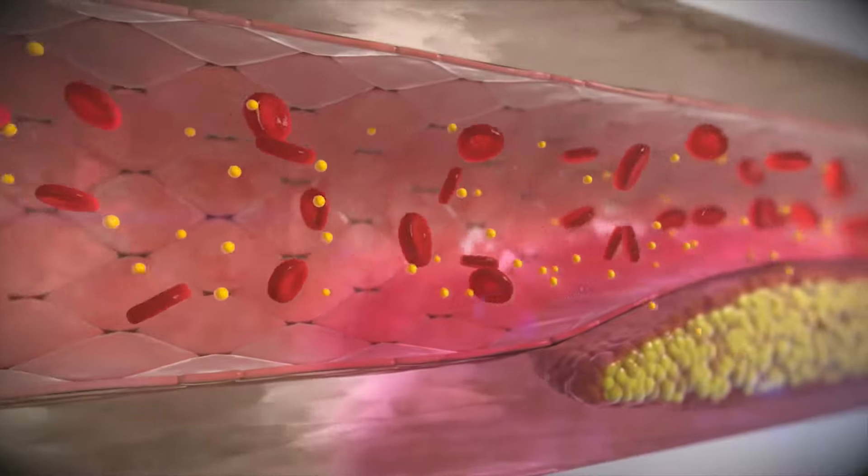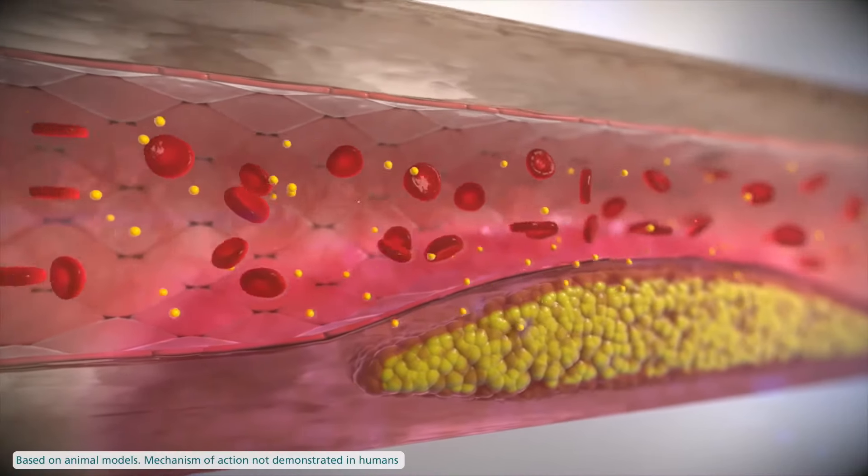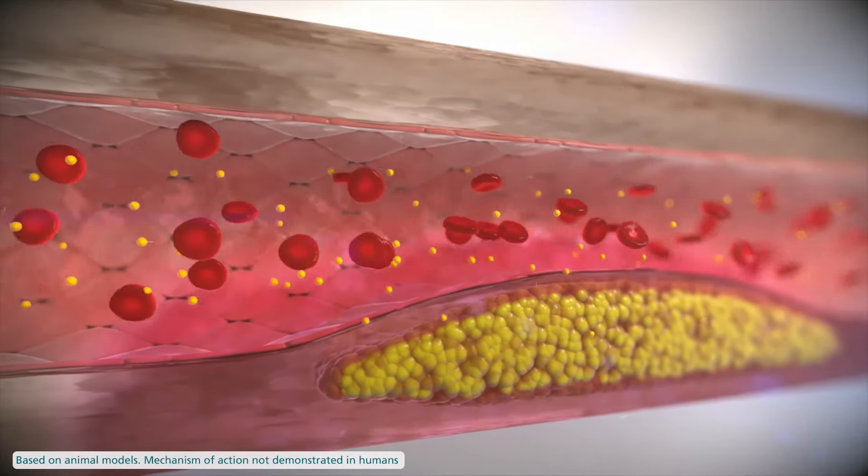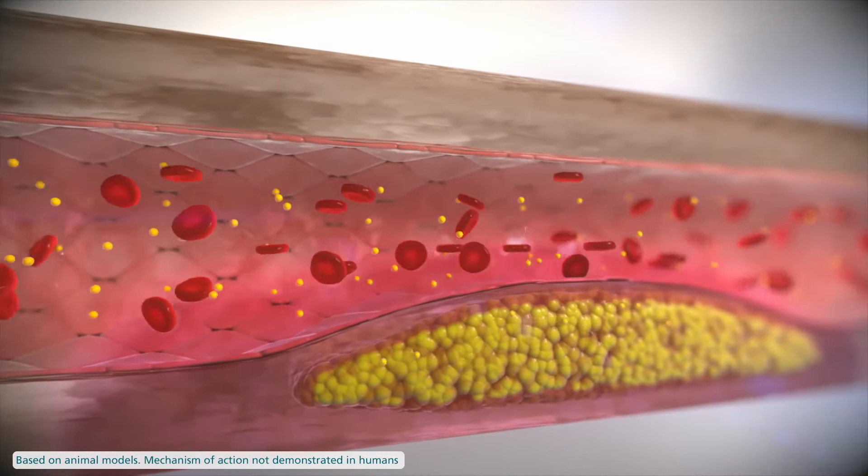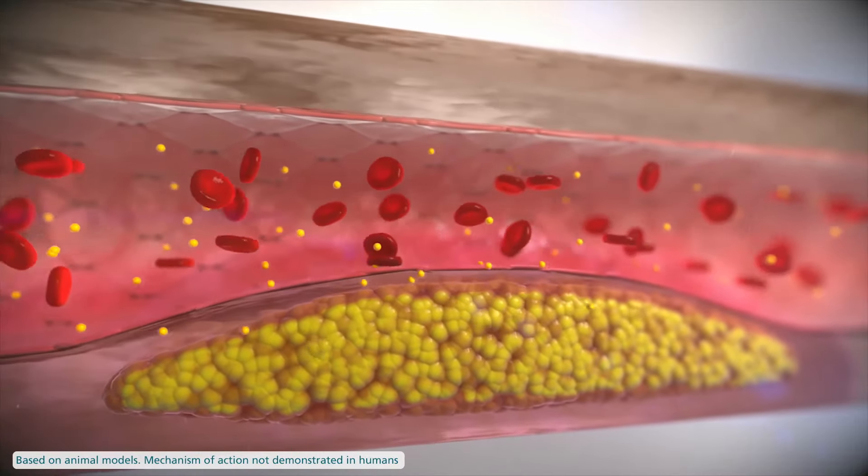People with type 2 diabetes are at a high risk of atherosclerosis and cardiovascular disease. In animal studies, GLP-1 receptor agonists have been shown to stabilize or delay the formation of atherosclerotic plaques, which may be linked to their anti-inflammatory properties.